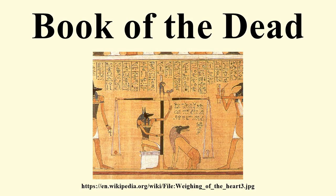The Egyptians also believed that knowing the name of something gave power over it. The spells of the Book of the Dead made use of several magical techniques which can also be seen in other areas of Egyptian life. A number of spells are for magical amulets which would protect the deceased from harm. In addition to being represented on a Book of the Dead papyrus, these spells appeared on amulets wound into the wrappings of a mummy. Everyday magic made use of amulets in huge numbers. Almost every Book of the Dead was unique, containing a different mixture of spells drawn from the corpus of texts available.